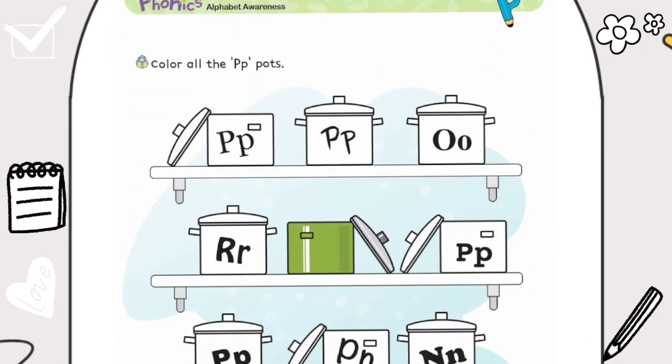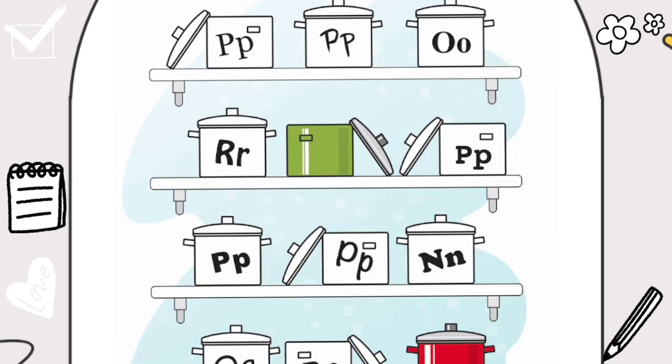Let's go to the next page. Page 67. Color all the P-Pots. P-P. Alright everyone, please get a colored pencil ready. We will color all the words and all the pictures that start with P. P-P-P. While we're doing it, we'll read aloud. P-P-P-P-P-P-P-P-P-P-P-P. Splendid.